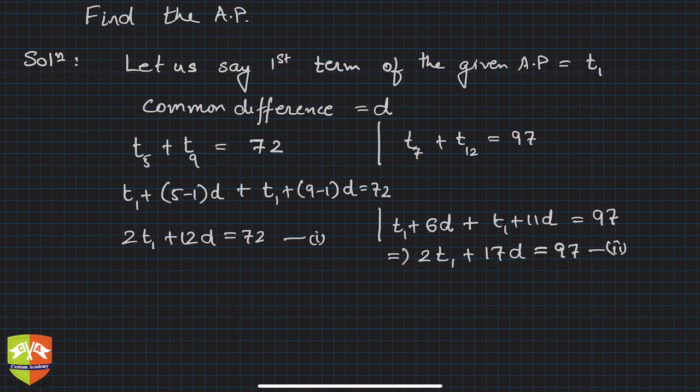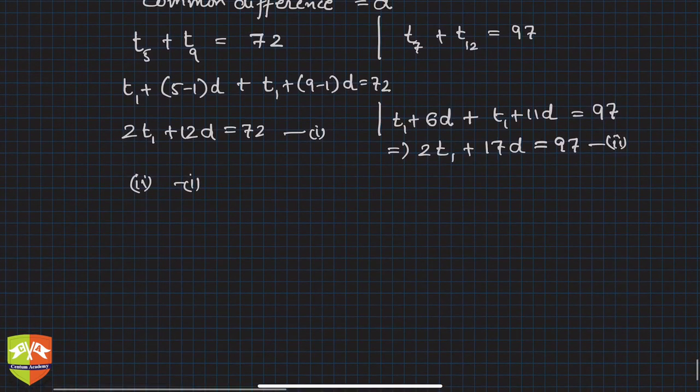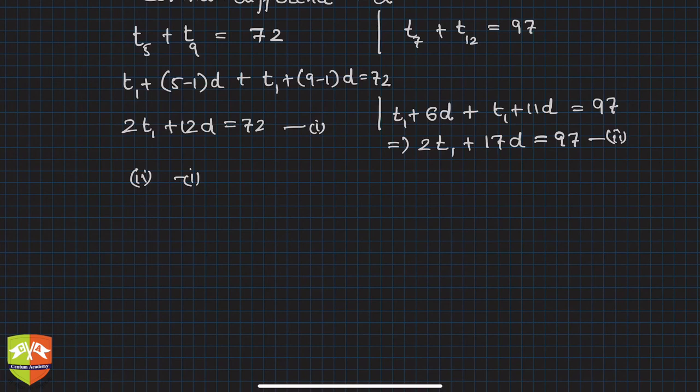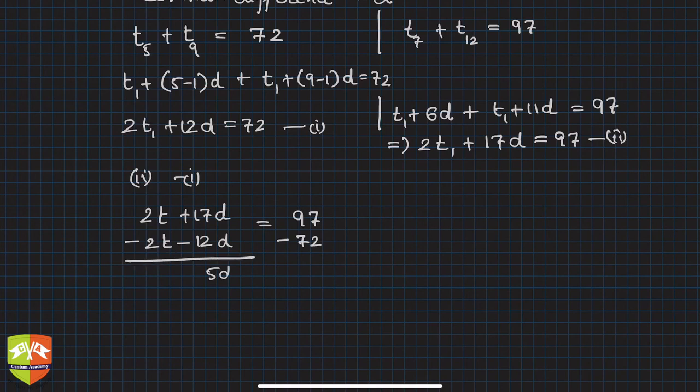Now let's do this exercise: equation 2 minus equation 1. So if you do 2 minus 1, what do I get? I get 2t1 plus 17d minus 2t1 minus 12d on the left-hand side, and in the right-hand side you'll get 97 minus 72. So this one is nothing but 5d, and this one is nothing but 25.